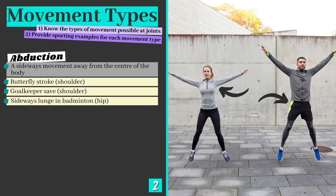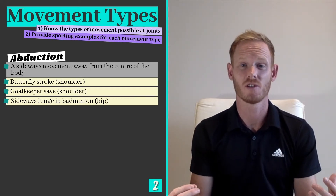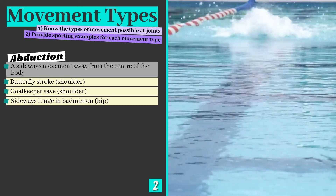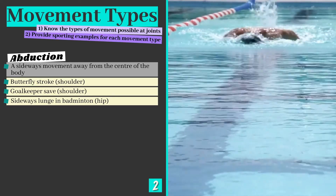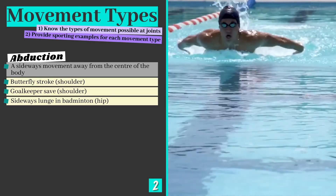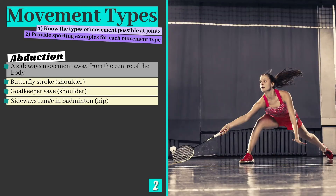Next we have abduction, which is a sideways movement away from the centre of the body. The main joints at which abduction is possible are the ball and socket joints — the shoulder and hip. We abduct the shoulder when performing the butterfly stroke in swimming. Football goalkeepers raise their arms to make saves to either side of the goal, while the leg moves away from the centre of the body when lunging to the side in badminton.